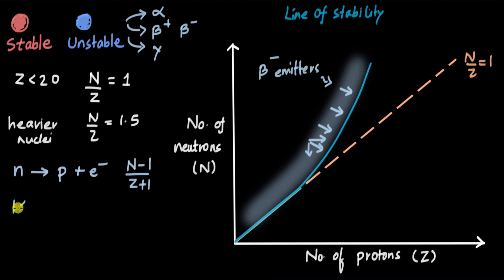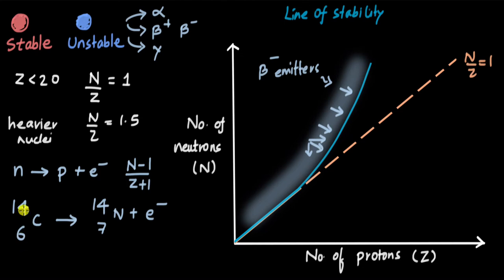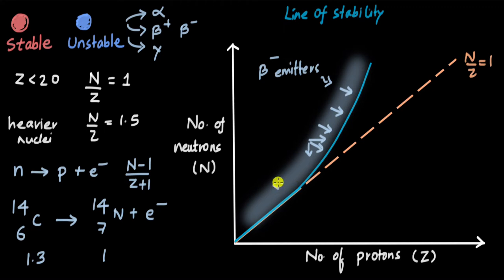For example, carbon-14 undergoes beta minus decay to form nitrogen-14, and one electron is released. The n/z ratio for carbon-14 is (14−6)/6 = 8/6 ≈ 1.33. For nitrogen-14 it is (14−7)/7 = 7/7 = 1. So carbon-14 was lying above the line of stability and is pushed toward it by beta minus decay.